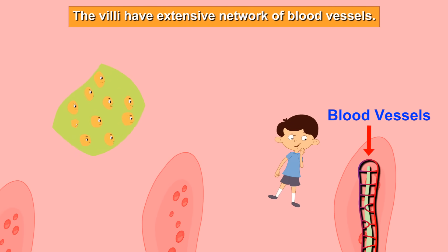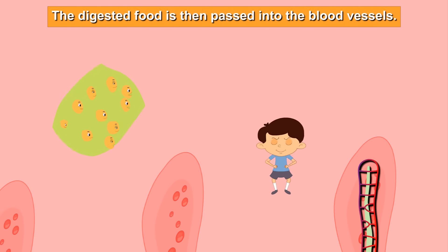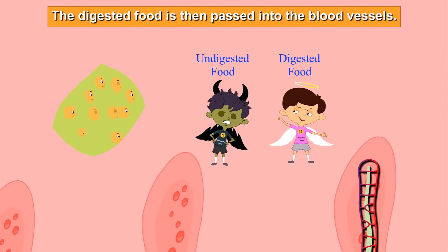The inner surface of the small intestine has finger-like projections called villi. The villi have an extensive network of blood vessels, and the digested food is then passed into these blood vessels.